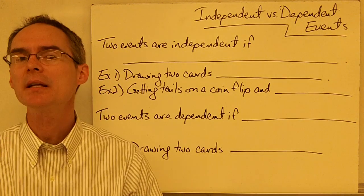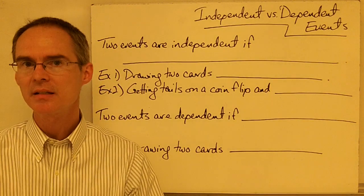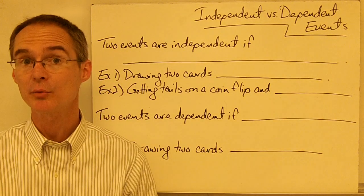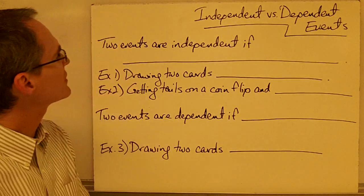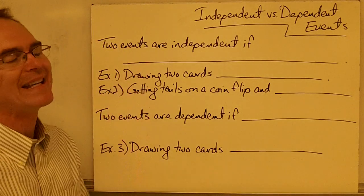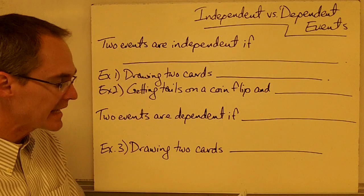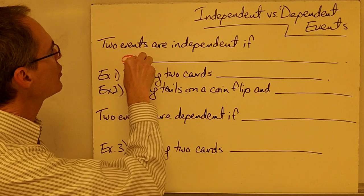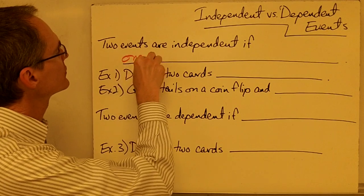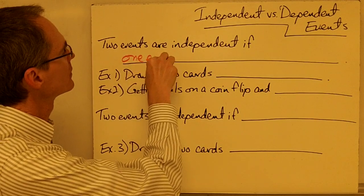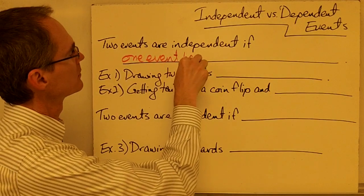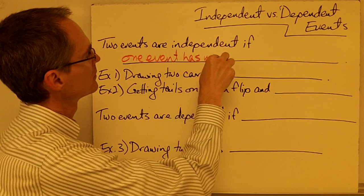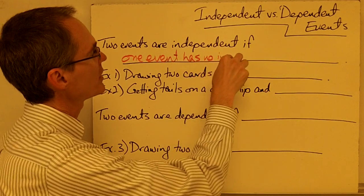This video is on independent and dependent events, and also complementary events. Two events are said to be independent if one event has no influence on the other event.